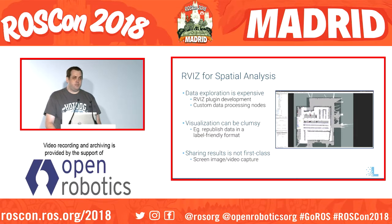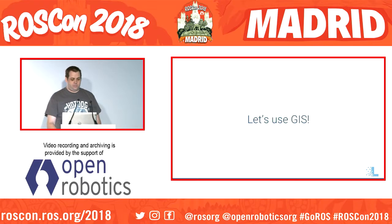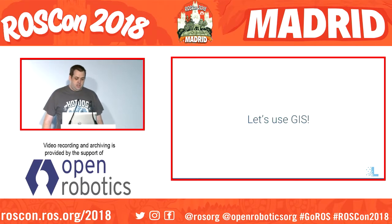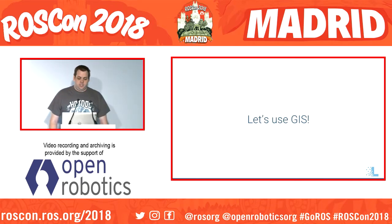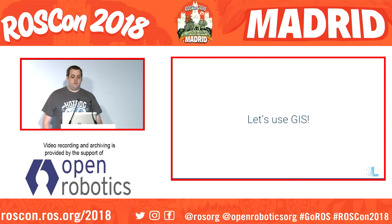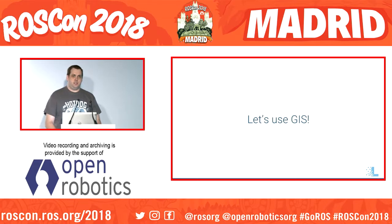We also end up spending a lot of time building our own tools. This brings us to the core of why I wanted to give this talk. There are some very powerful tools that we can make better use of in robotics for spatial data analysis. GIS, or Geographical Information Systems, is a geomatics paradigm that, put very simply, lets us use computers to explore spatial data.